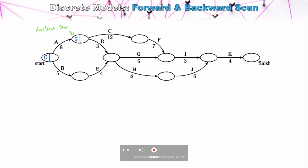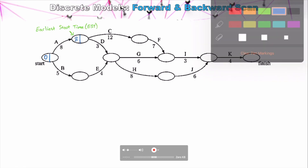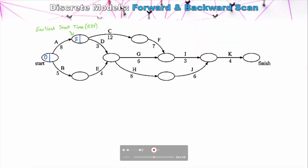You may see the earliest start time abbreviated as EST. This refers to the earliest start time at a particular node, indicating when the next task can begin. For Task E, it requires Task B to be completed, and Task B takes five units of time, so Task E can be started at earliest at five units of time.